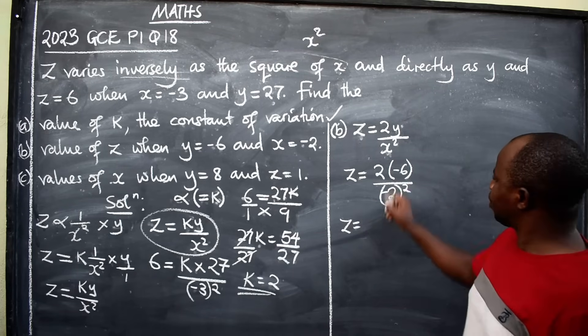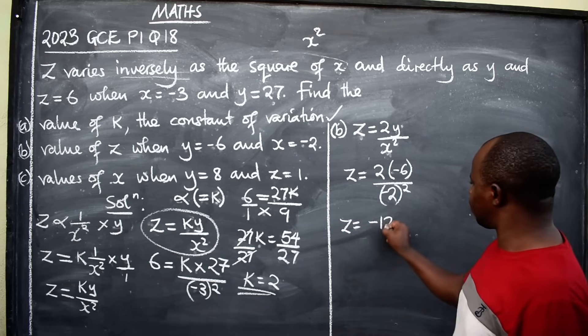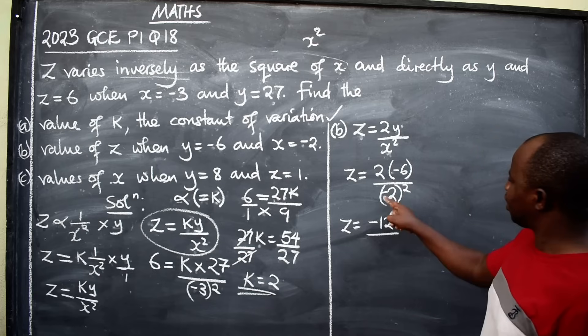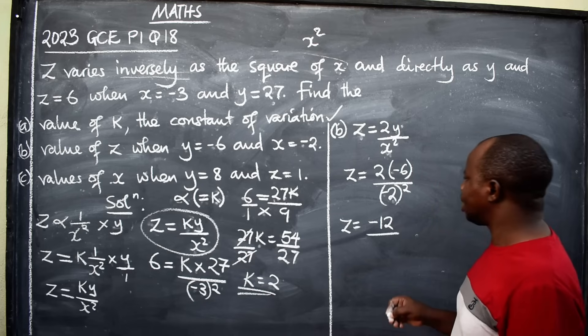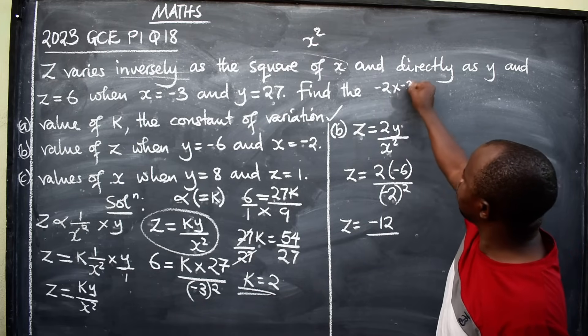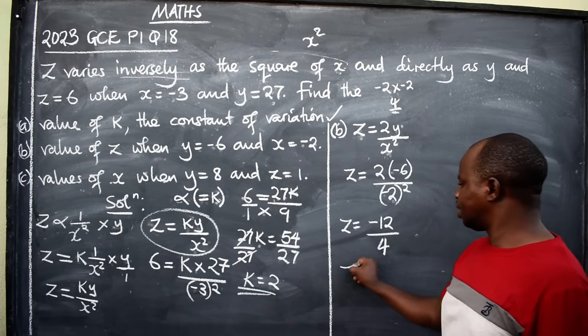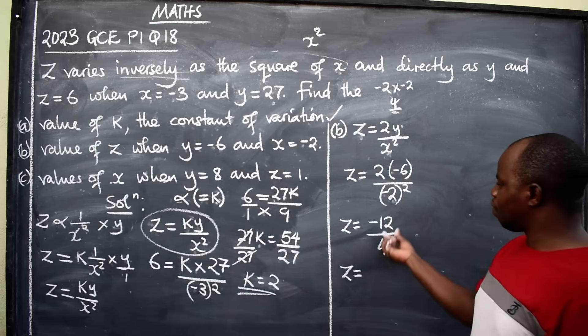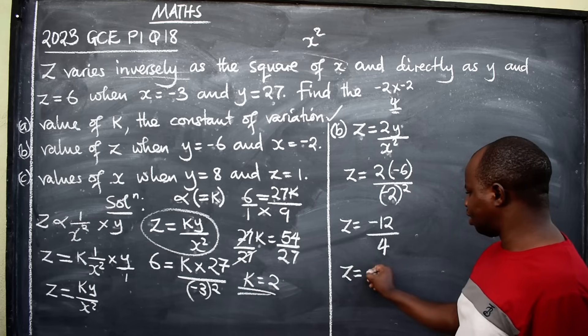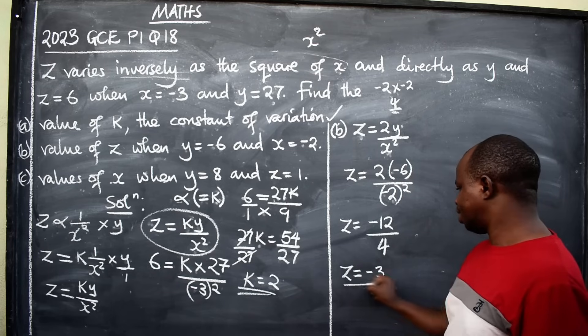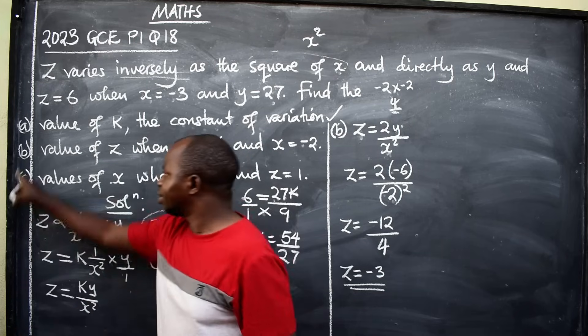Z will be equal to 2 times negative 6, that will be negative 12, over negative 2 times negative 2. Negative 2 times negative 2, the answer is positive 4. So we have 4 here. Z will now be equal to how many 4s are in 12? That will be 3. Remember there is a negative here. Negative 3. This is the answer to the second part.